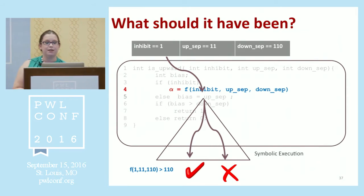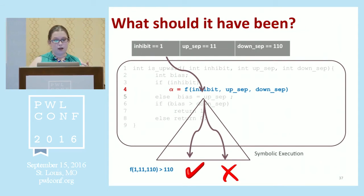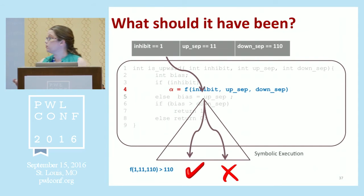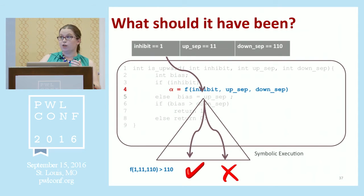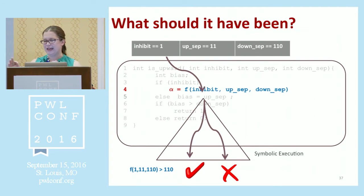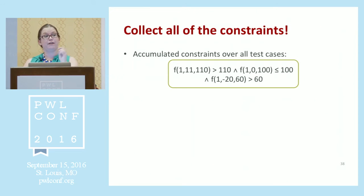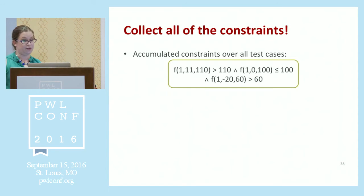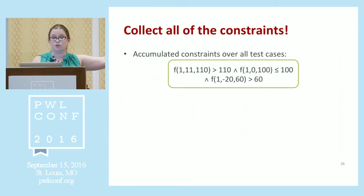Why did we do that? Because if instead of bias just being a symbolic value, we set it to some arbitrary mathematical function F that has access to all in-scope variables like inhibit, up-step, and down-step — we know that on this input, if F returns a number greater than 110 the execution passes, otherwise it fails. We can collect all of the constraints over that function across all test cases and concatenate them together. Now all we need is a function that satisfies those constraints.